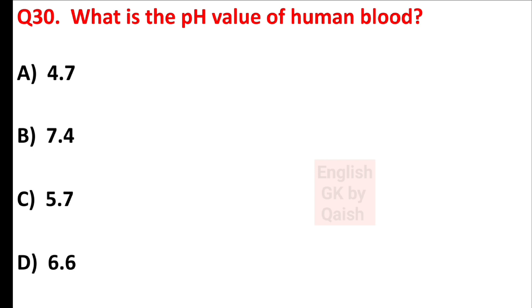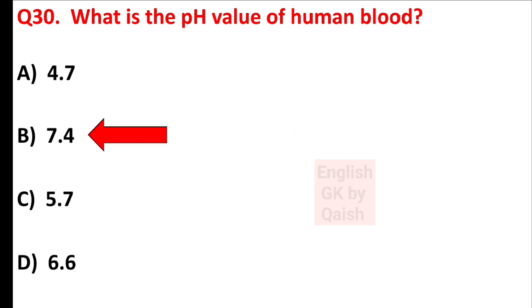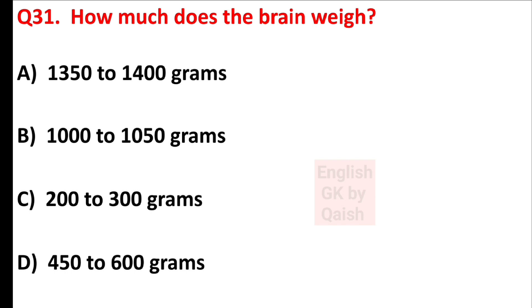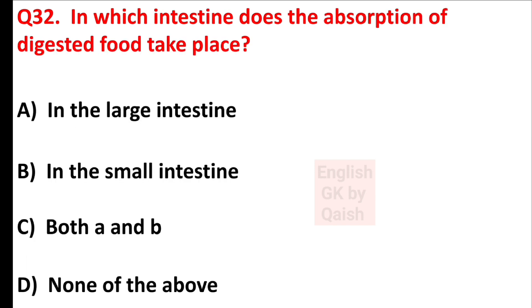What is the pH value of the human body? Answer is option B — 7.4. How much does the brain weigh? Answer is option A — 1350 to 1400 grams. In which intestine does the absorption of digested food take place? Answer is option B — in the small intestine.